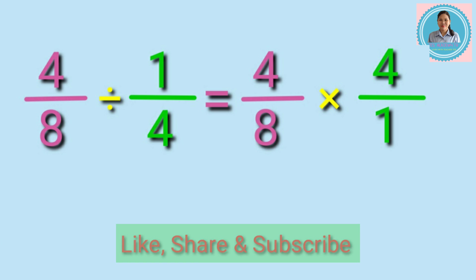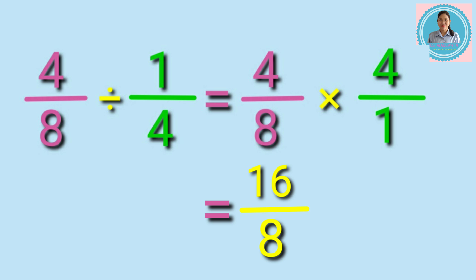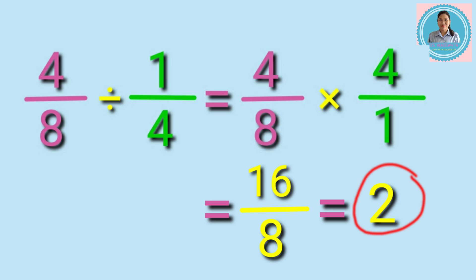Next step is to multiply the numerators and multiply also the denominators. So four times four equals sixteen, and eight times one equals eight. The answer is sixteen eighths. It is an improper fraction, so we need to simplify it by dividing the numerator by the denominator. Sixteen divided by eight equals two, so the final answer is two.